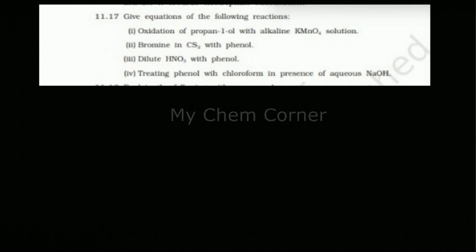The first one says oxidation of propan-1-ol with alkaline KMnO4. This is a simple one. Let's write the formula first. Propan-1-ol is nothing but propanol itself, so I have CH3-CH2-CH2-OH. So I have propanol with alkaline KMnO4.